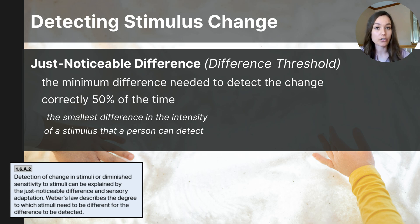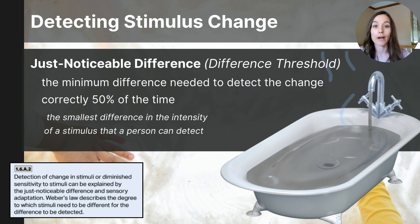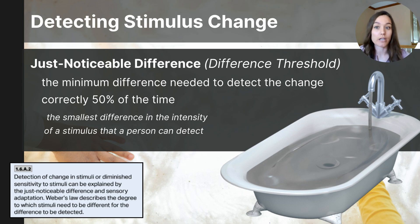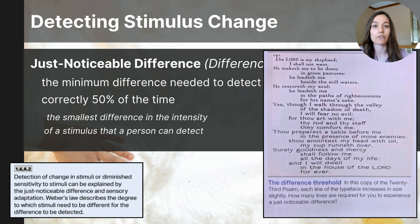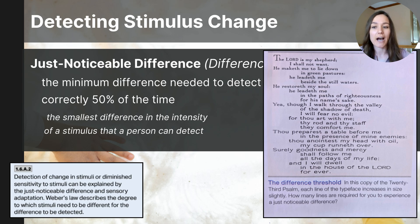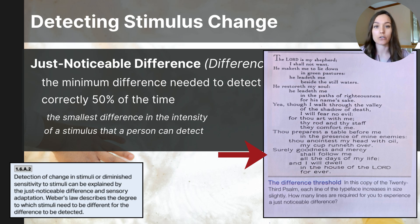Here's an example. Imagine you're sitting in warm bath water. Gradually as you sit in the bath, the water will start to cool. The difference threshold is the point at which you notice the water is getting cooler. If the temperature drops by one degree Fahrenheit, you might not notice it, but once it drops by say three degrees, you're probably aware the bath water is getting cooler. Another example from the textbook is when font size slowly changes. On the screen there's a copy of the 23rd Psalm printed in gradually increasing font size. You might not notice at first that the font size is changing, but the point at which it becomes evident that the font is larger is your just noticeable difference.